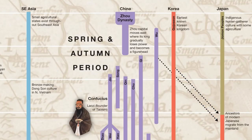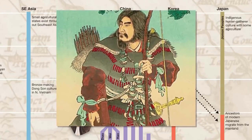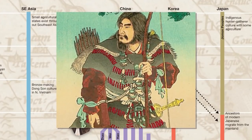Originally Japan was inhabited only by the indigenous Jomon peoples. But during the Chinese Spring and Autumn Period, settlers from mainland Asia arrived, and it is from these settlers that most Japanese people today descend. Interestingly, it is also at this time that the first emperor of Japan, Jimu, is thought to have lived. However, most historians see Jimu as being strictly a legendary figure, not an actual emperor.